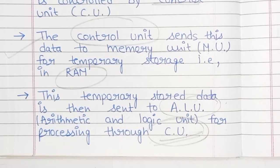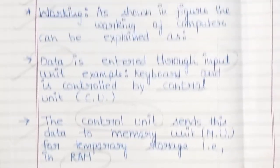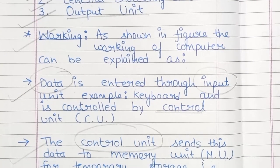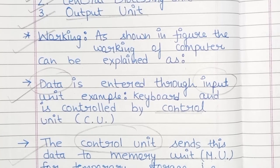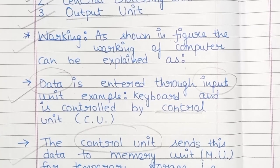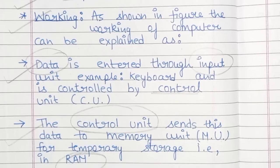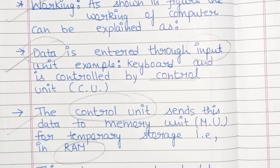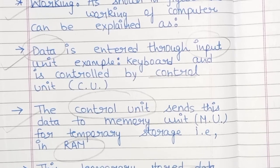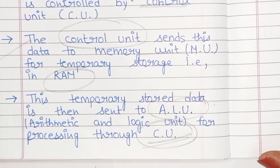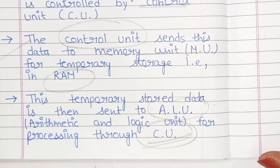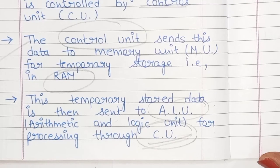First, the data will enter through the input unit and will be controlled by the control unit. The control unit will send this data to the memory unit for temporary storage — for example, to RAM. The temporarily stored data will then be sent to the ALU, the arithmetic logic unit, for processing.